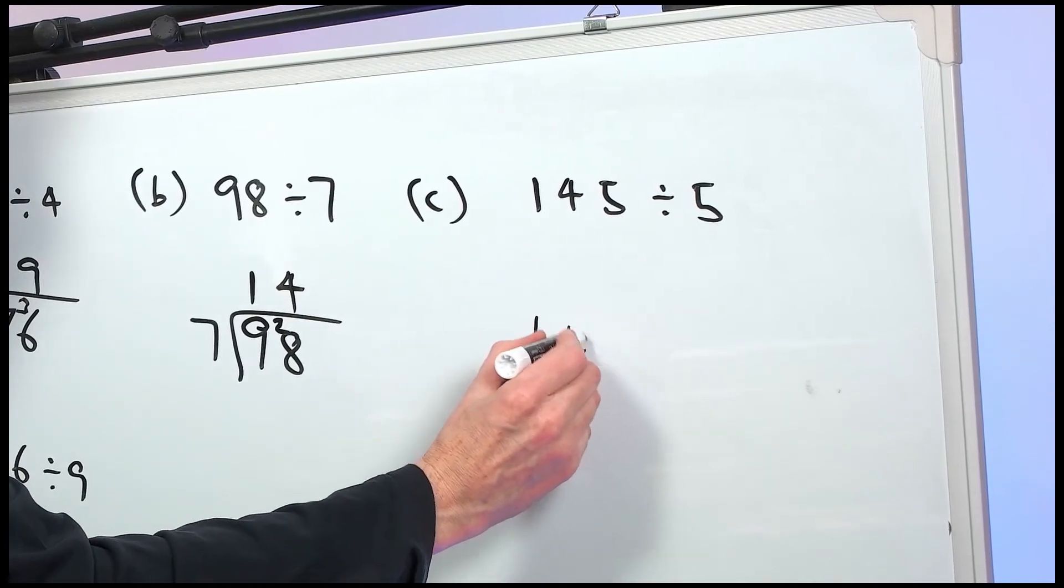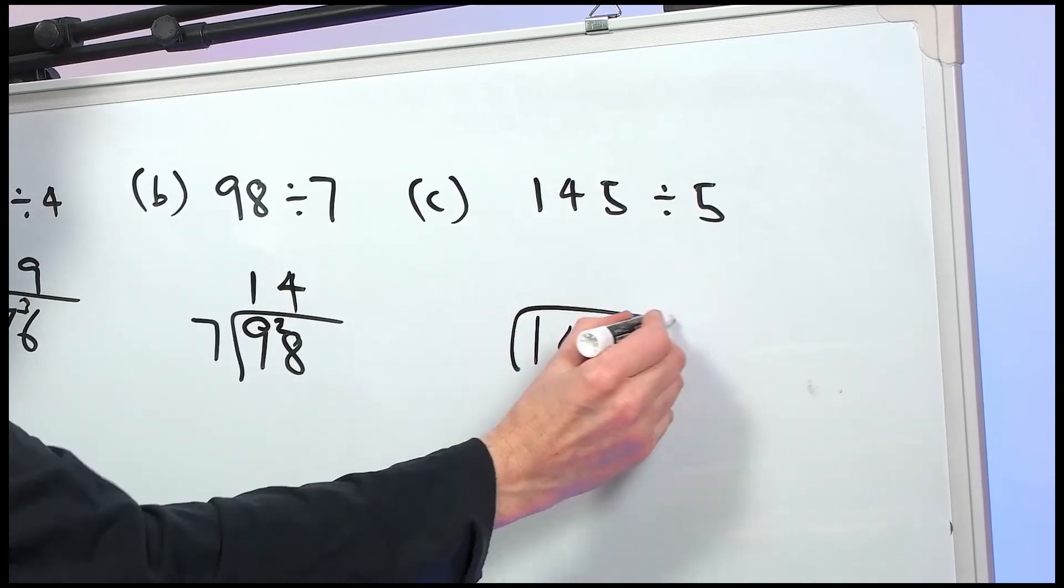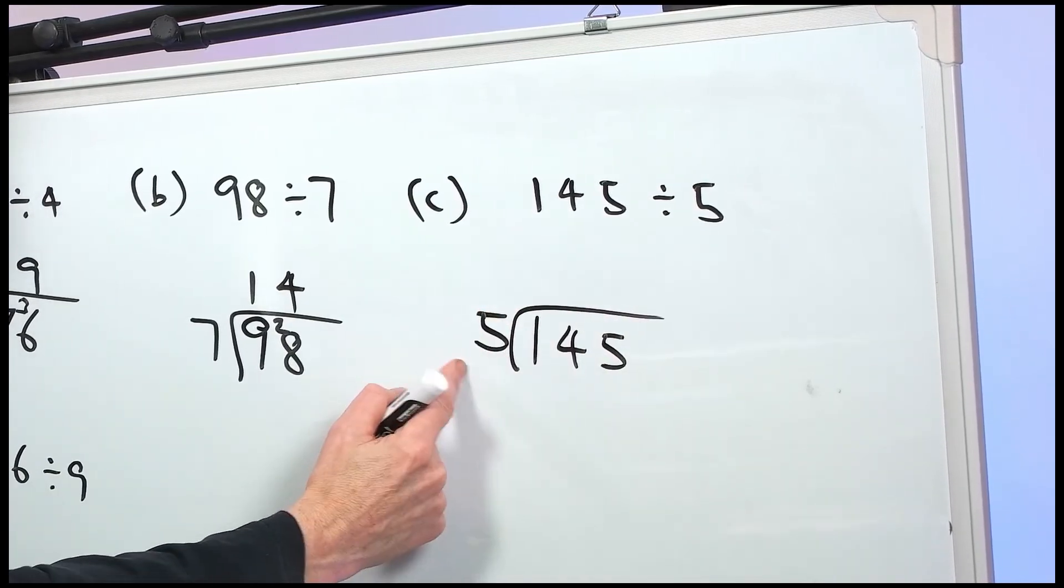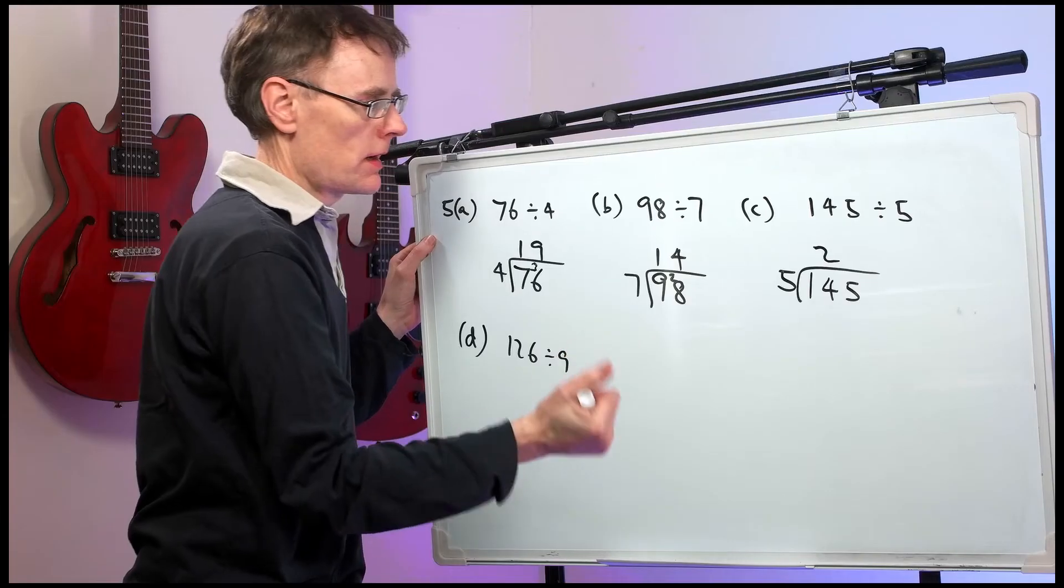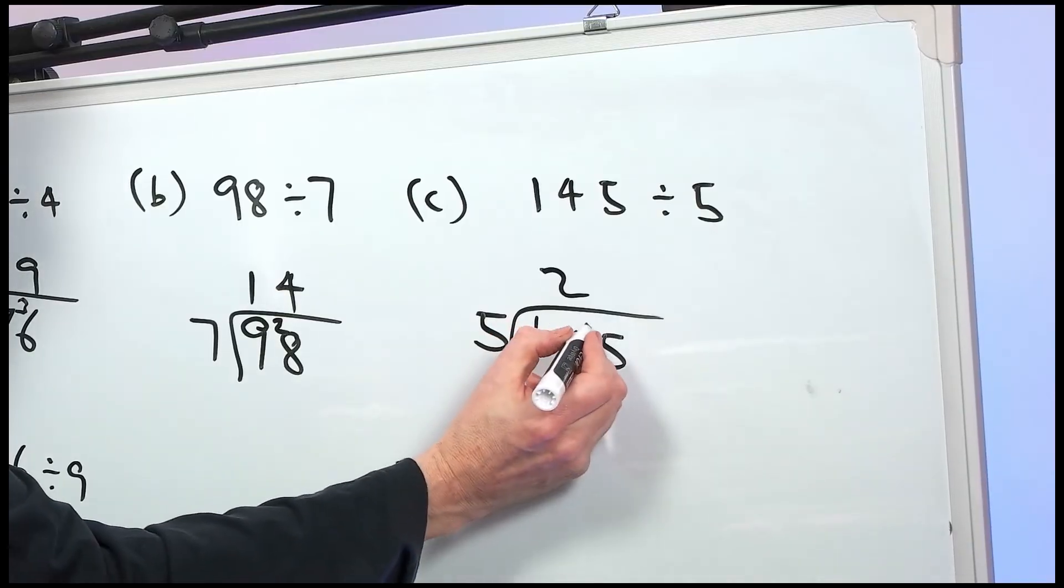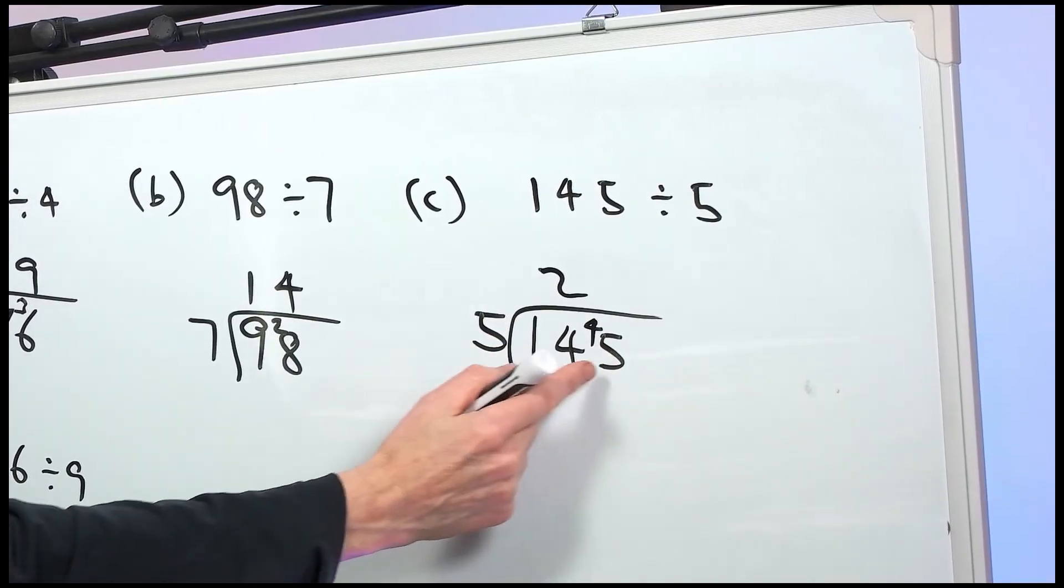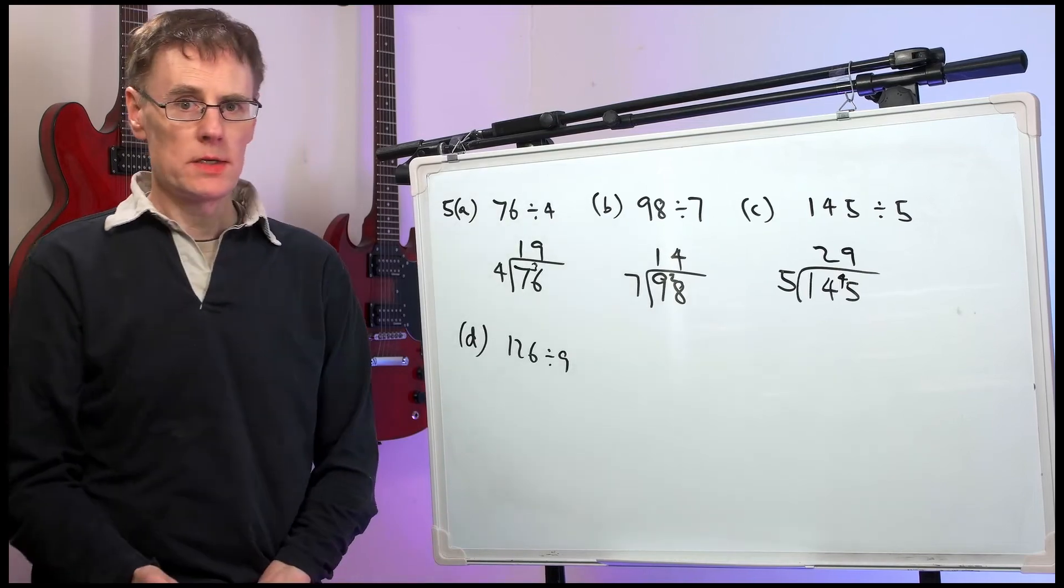Part C. 145 divided by 5. 5 into 14. 5 times 2 is 10. 11, 12, 13, 14. So, it's remainder 4. And 5s into 45 go 9 times. 29.